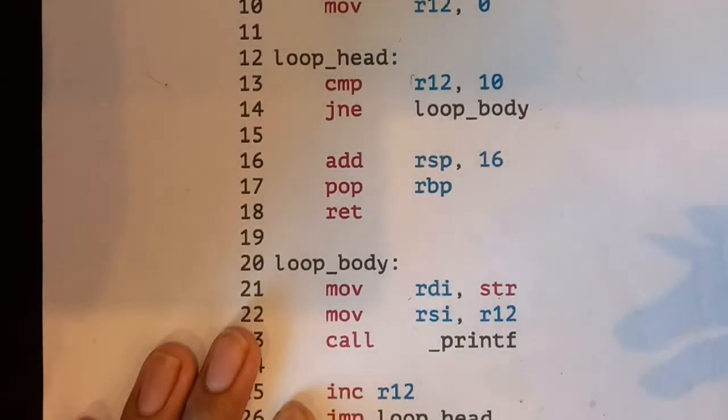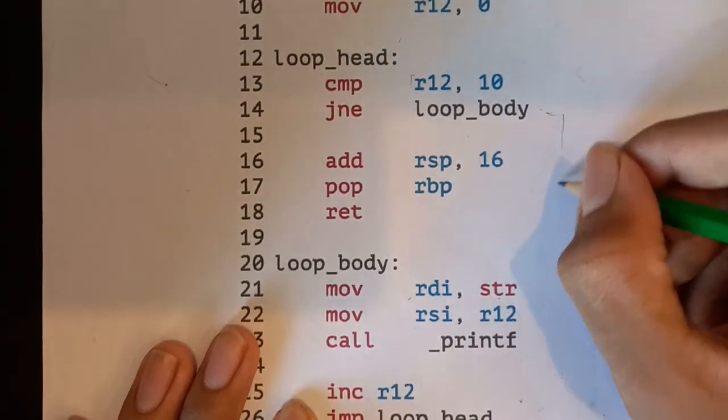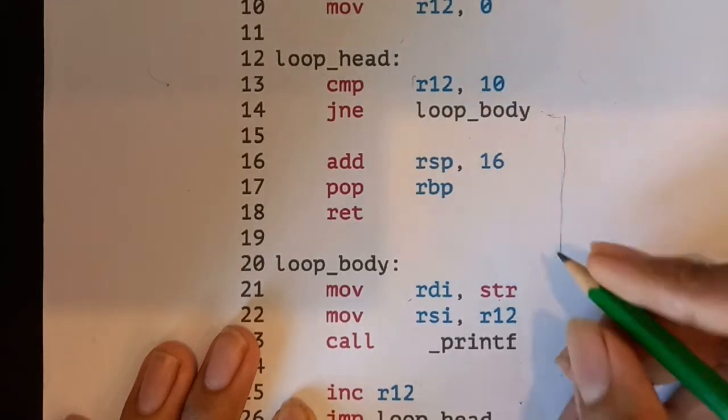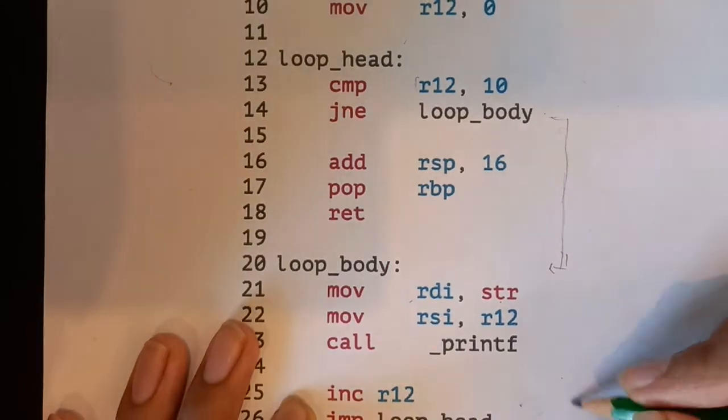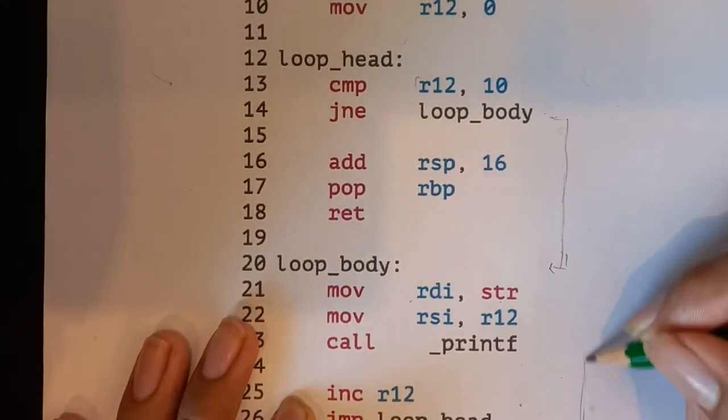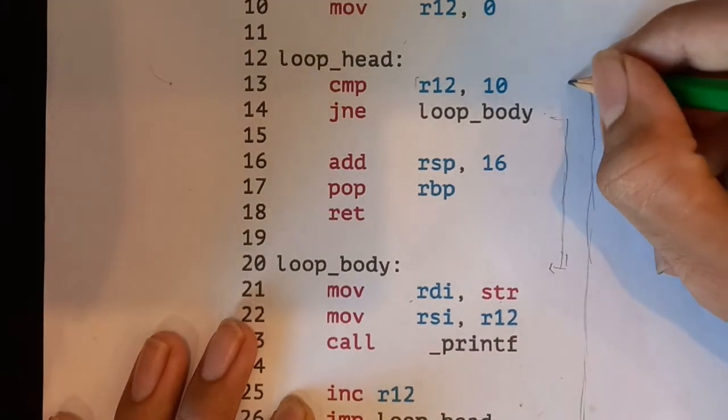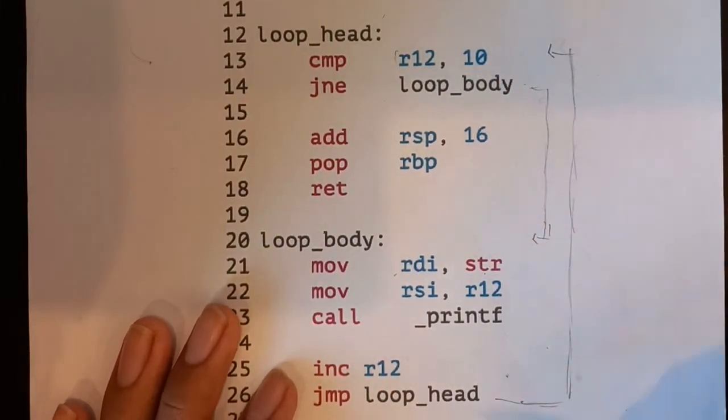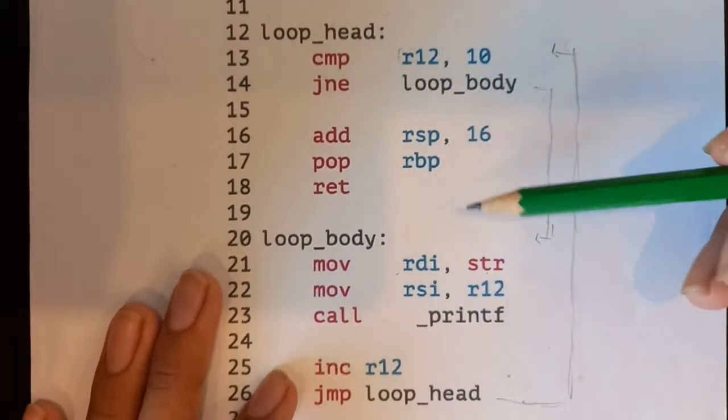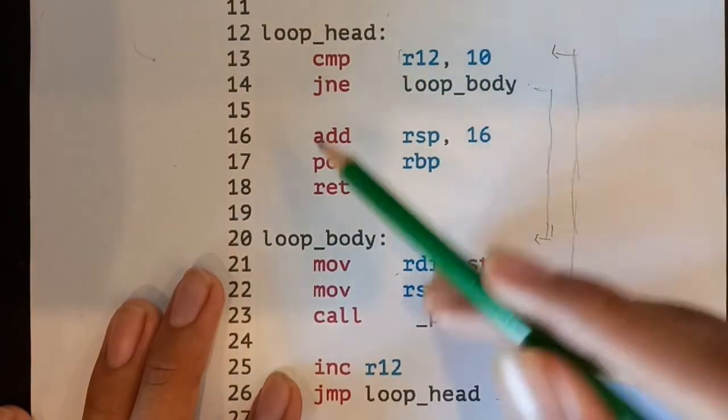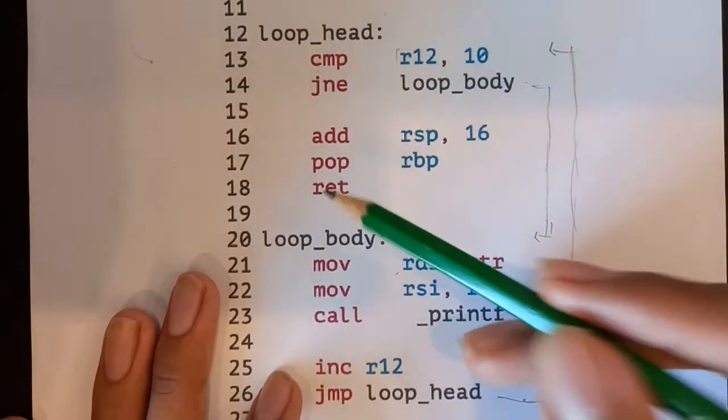So sometimes, and I know quite a few IDEs also do this, I like to just draw some arrows for myself just to help understand the control flow. And you can see what's essentially happening here is we have a loop. We're jumping from here to here and then back up there. And this will keep on going until R12 is equal to 10, in which case this jump not equals to will do nothing. And then we just reset the stack and return.